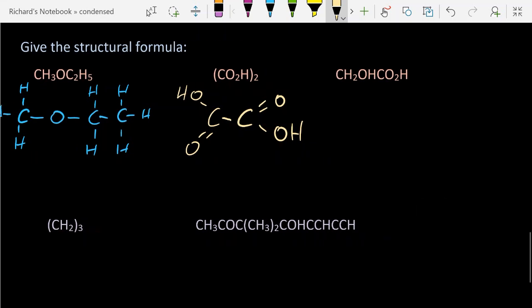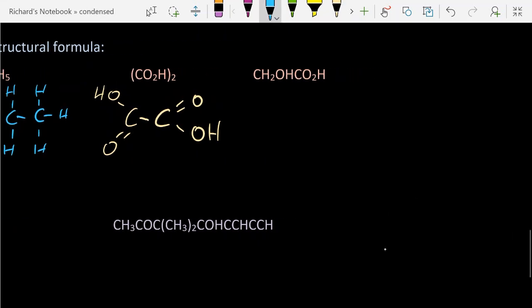For the next one, I've got what looks like CH2OH. OH is telling me it's probably an alcohol group. And then CO2H - that's a carboxylic acid group. So that's a carboxylic acid and an alcohol there.